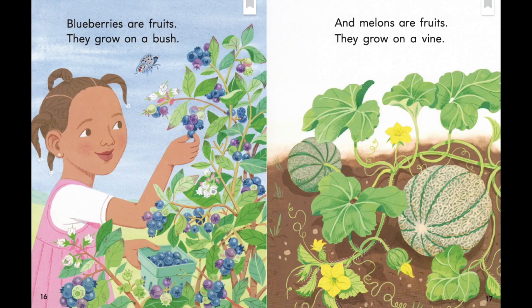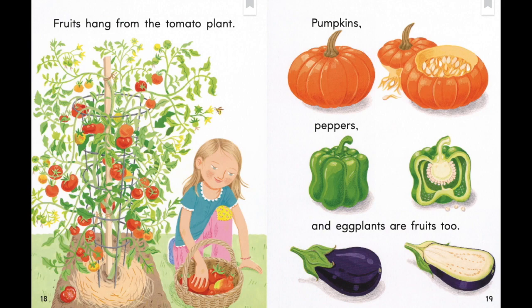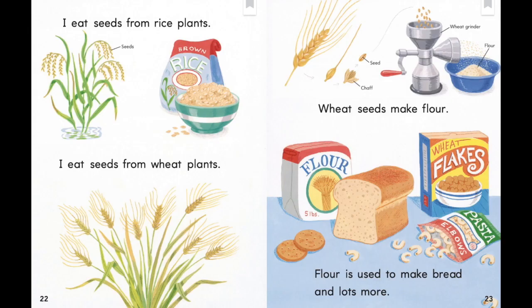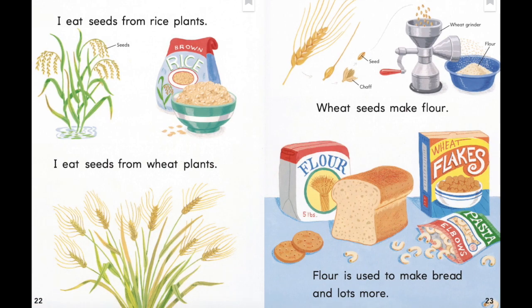Melons are fruits; they grow on a vine. Fruits hang from the tomato plant — pumpkins, peppers, and eggplants are fruits too. In some plants, the seed is the best part to eat. Peas are seeds — they grow inside pods. Beans too, like string beans, cranberry beans, dried beans. I eat seeds from rice plants and seeds from wheat plants. Wheat seeds make flour, and flour is used to make bread and lots more. What does the diagram show?